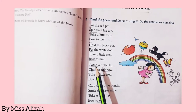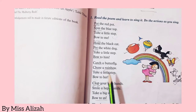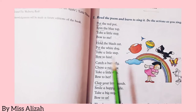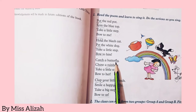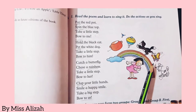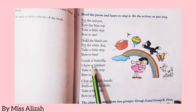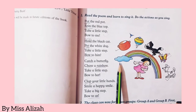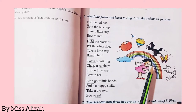'Catch a butterfly, chase a rainbow, take a little step, bow to her.' What does 'catch' mean? Catch ka matlab hota hai pakarna — to catch. Catch a butterfly. Where is the butterfly? Search in this picture — here is the butterfly. 'Chase a rainbow.' Chase ka matlab hota hai picha karna — to chase. Where is the rainbow? Here is the rainbow. Rainbow is made up of seven colors.